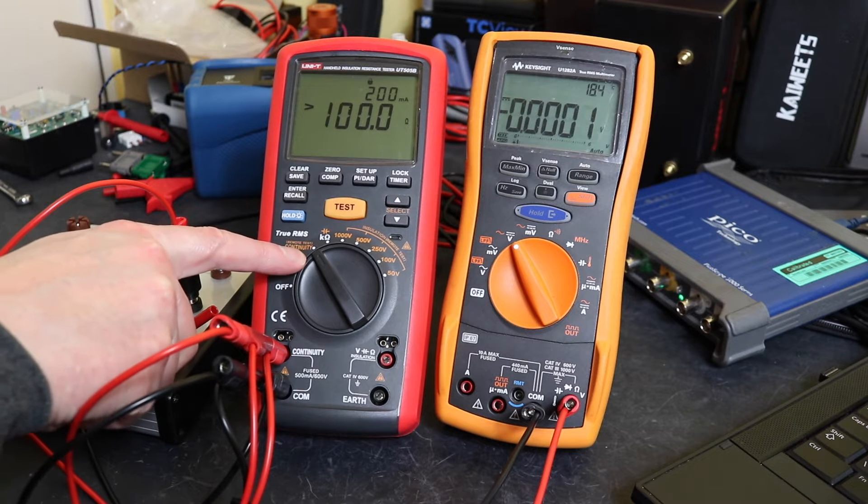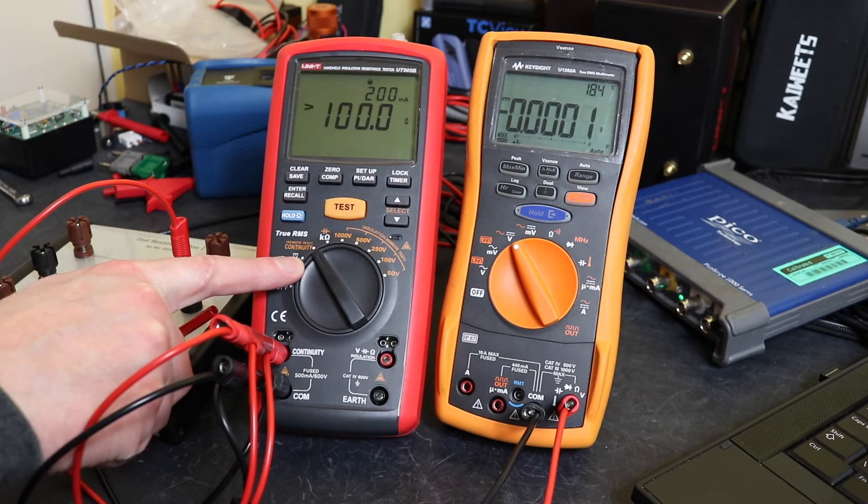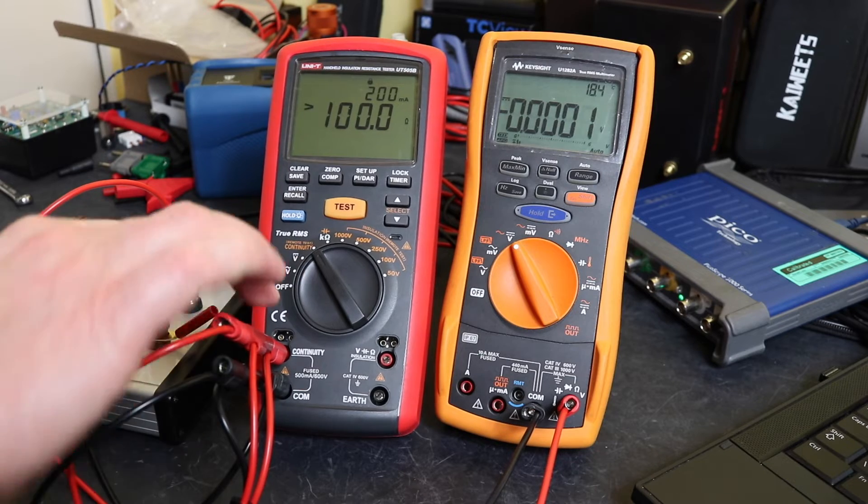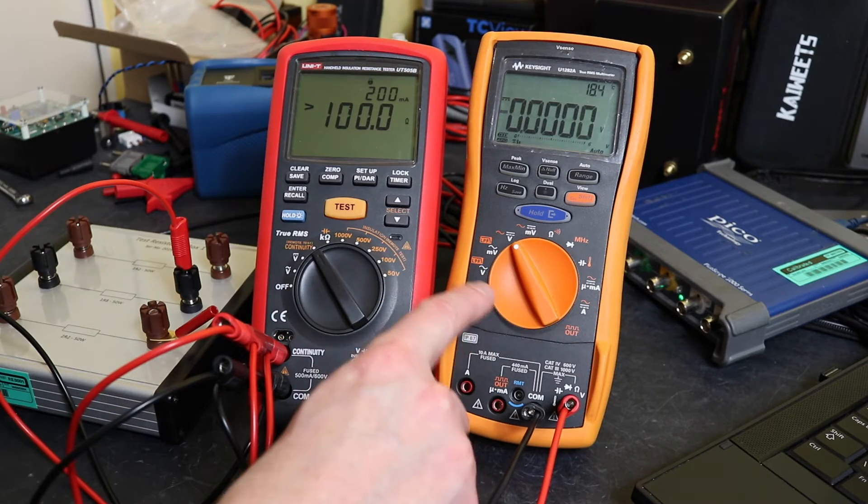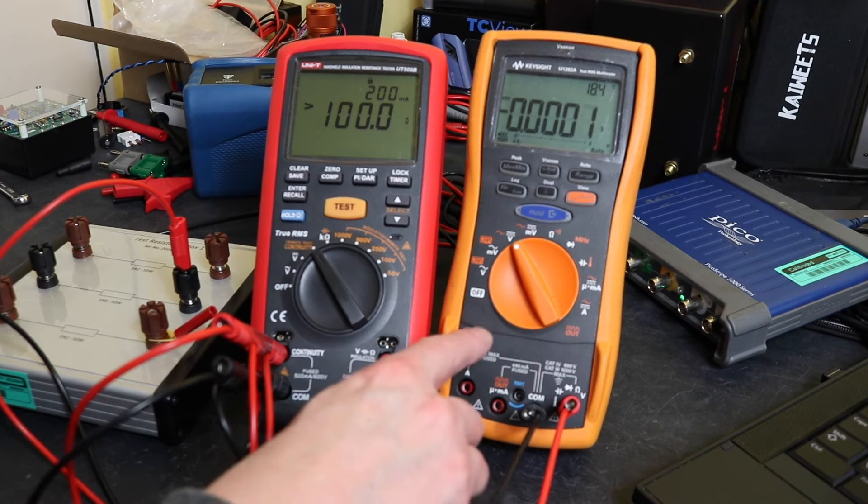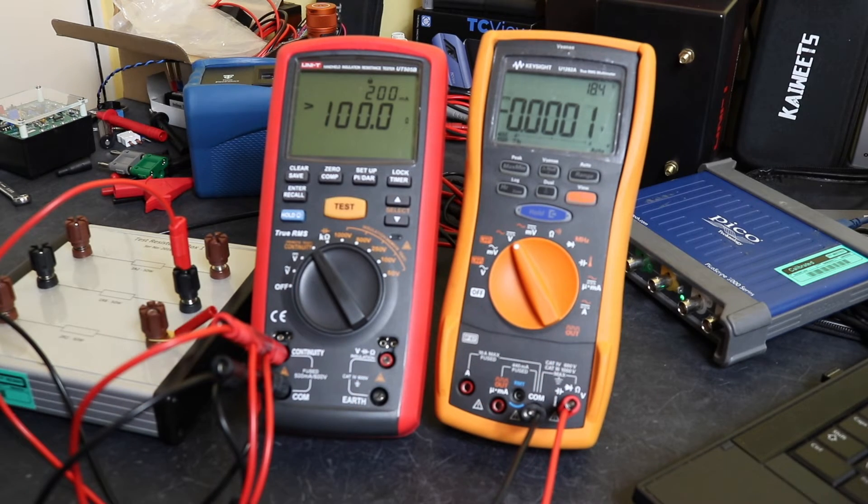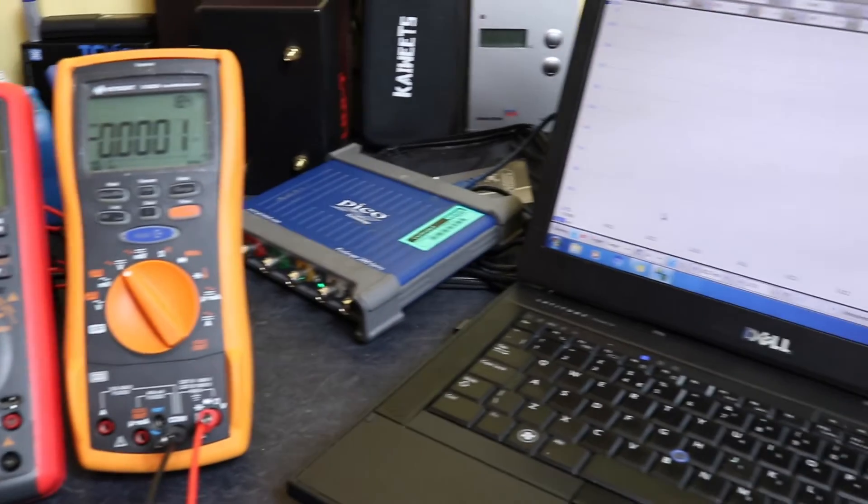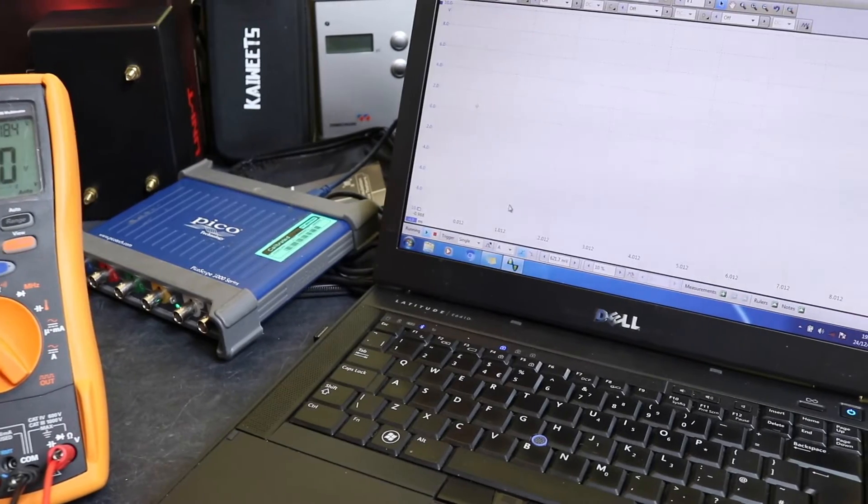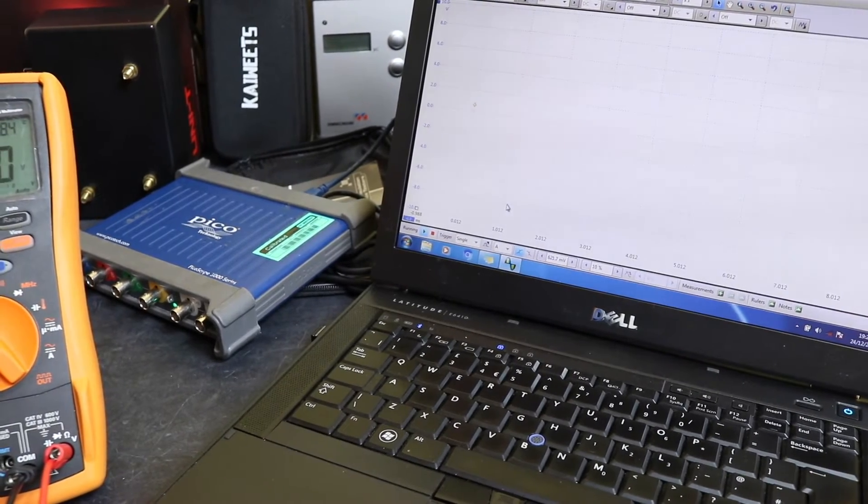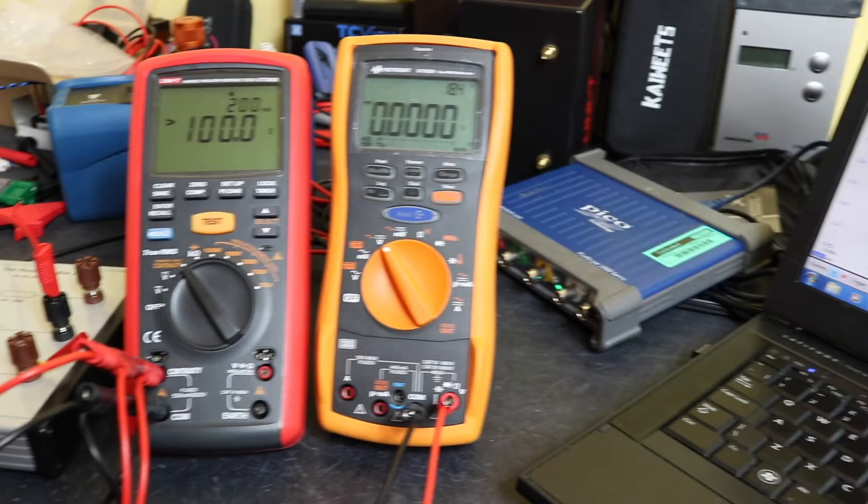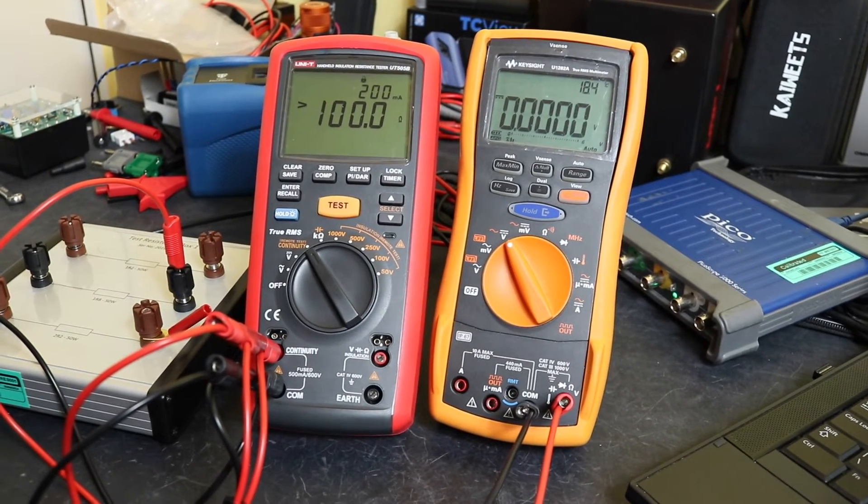At the moment we're set to continuity function on the UT505B and we're actually in open circuit. I've got the U1282A running here as a voltmeter just straight across the output, and I've also got an oscilloscope just over there in the form of a Picoscope, data being collected by the laptop, so we can see what the output trace is like.